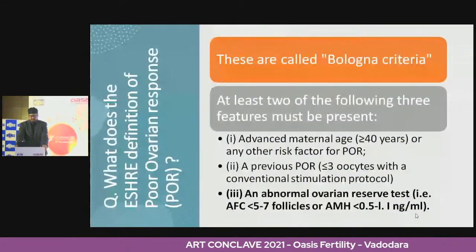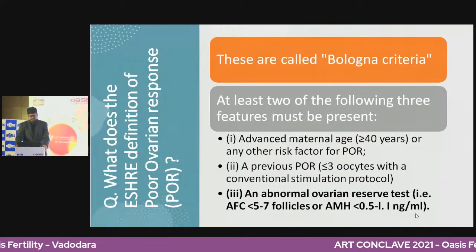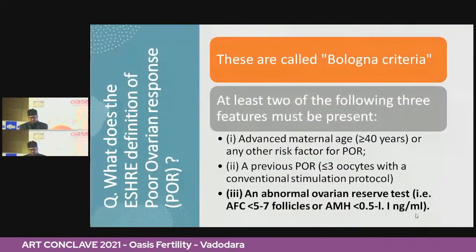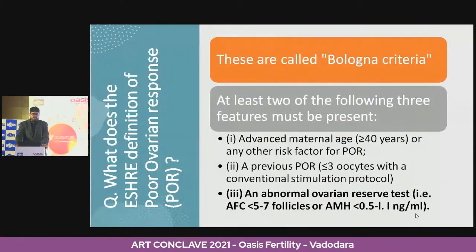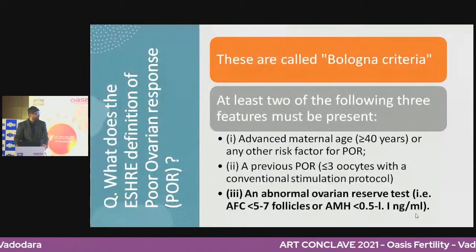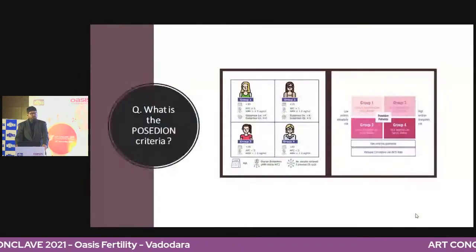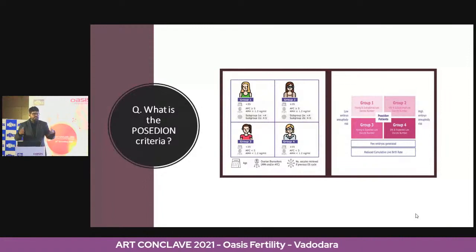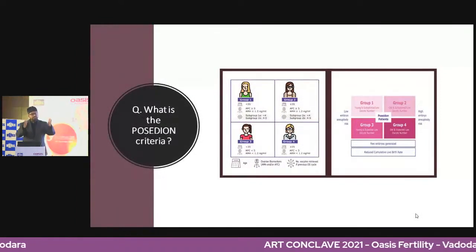The Bologna criteria — ESHRE's definition for poor ovarian reserve — includes advanced maternal age, previous poor ovarian response of less than 3 oocytes, and abnormal ovarian reserve testing: less than 5 to 7 follicles or AMH less than 0.5 to 1.1. Bologna is an area in northern Italy, 30 minutes from the Imola Grand Prix — where Ayrton Senna died — a mecca for Formula 1 fans, and apparently for fertility too. There's also the Poseidon criteria — models created to predict fertility outcome and poor ovarian reserve. AMH is an important integral part of all these criteria.